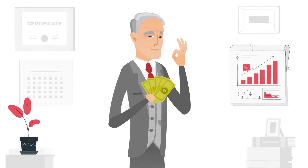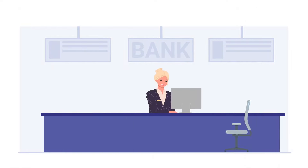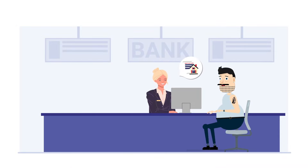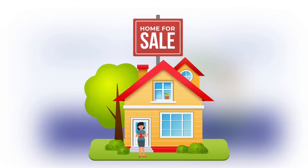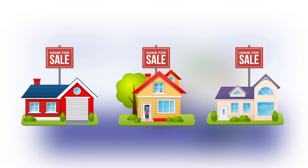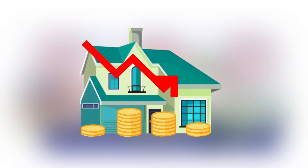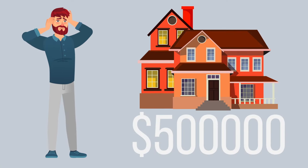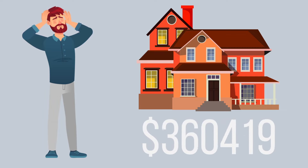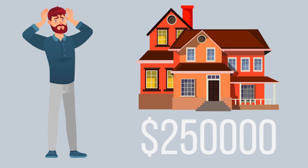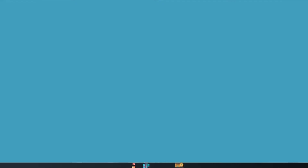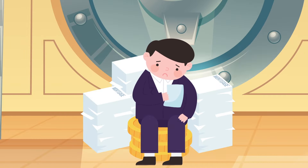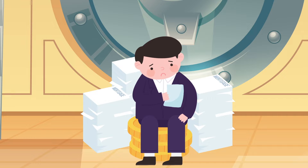It seemed like the perfect investment, so the banks gave mortgages to everyone. That inflated home prices to unbelievable heights. But at some point, one of the borrowers defaulted, so his home was put on sale, then the second one, then the third. Soon there were so many homes on sale but not enough buyers, and home prices began to fall. When people saw that their $500,000 mortgage house was suddenly worth only $250,000, it stopped making sense for them to keep making mortgage payments, so they walked away. Now there were even more houses on sale, driving home prices even lower. So the banks were left with a lot of worthless mortgages that no one wanted to buy, and they went bankrupt one after another.